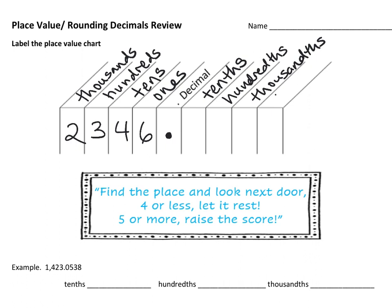Two decimal places is called the hundredths — hundred with T-H-S at the end. The next decimal space is called the thousandths — thousand with T-H-S. That's how we know we're talking about decimals. The next one is called the ten thousandths, which is a mouthful. I'm almost never going to ask you to round to the ten thousandths; we're mainly going to stick to rounding to tenths, hundredths, and thousandths.